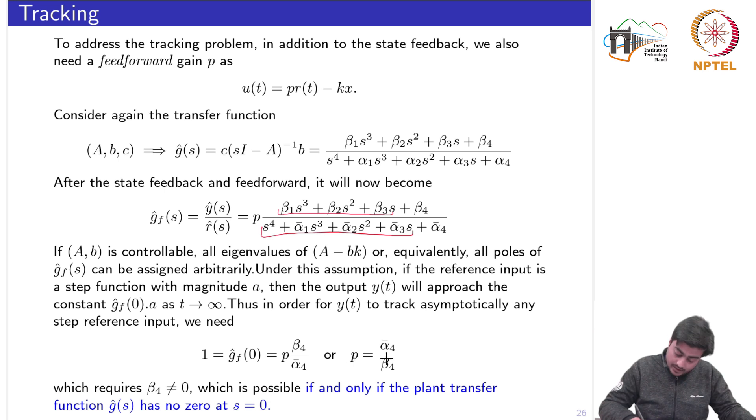If we substitute p as the inverse of this factor which requires that beta 4 should not be equal to 0, the tracking would be possible if and only if the plant transfer function g hat s has no zero at s is equal to 0.